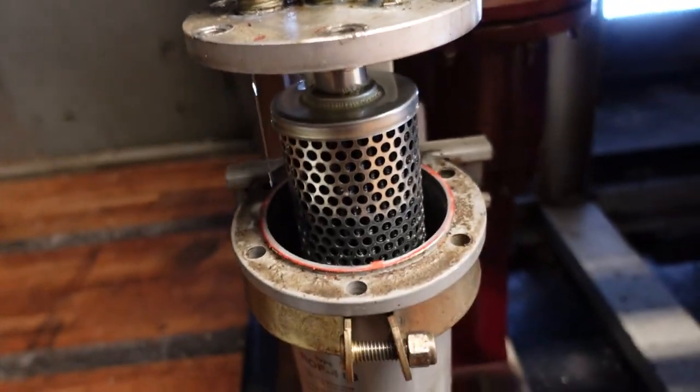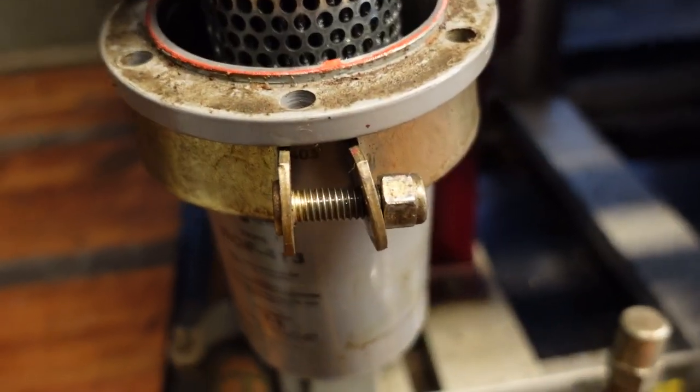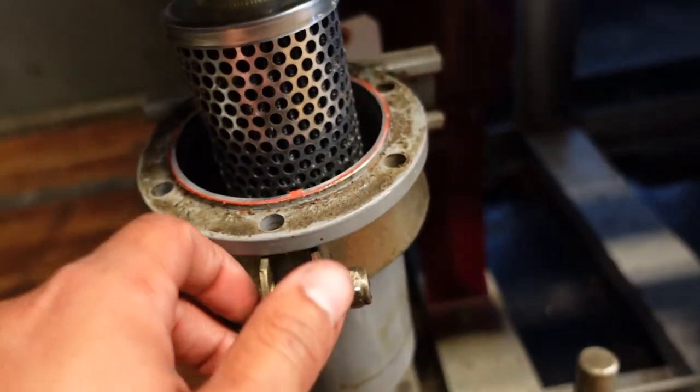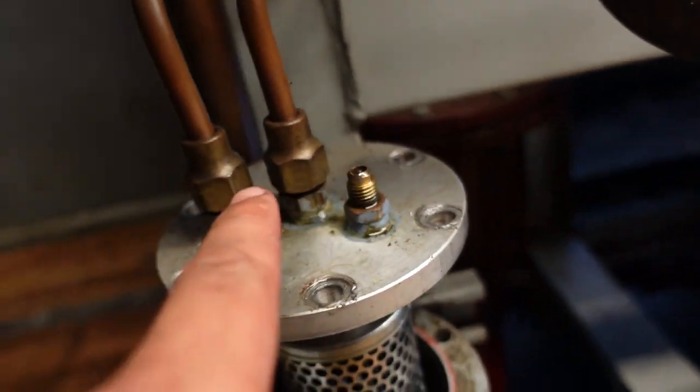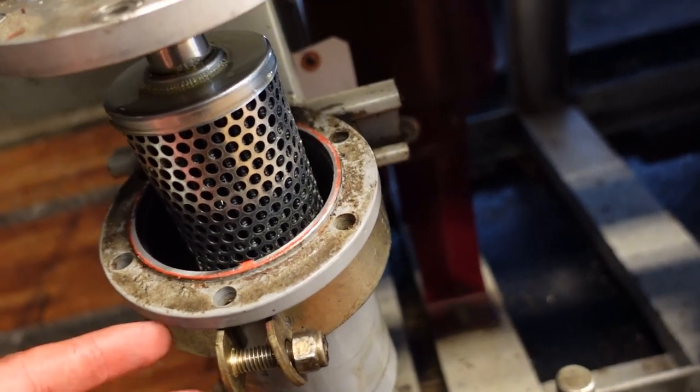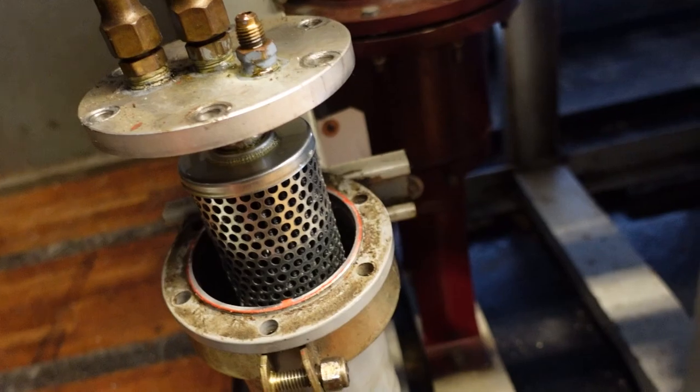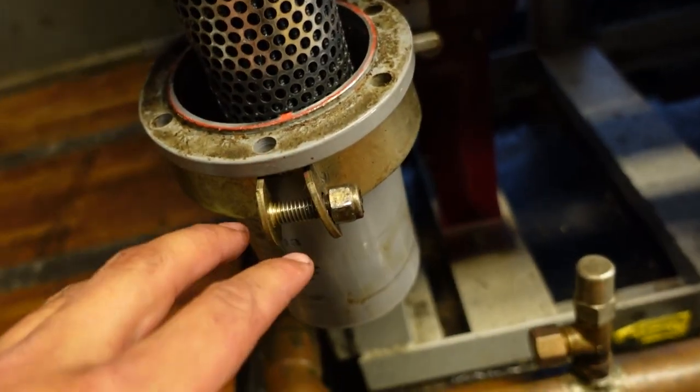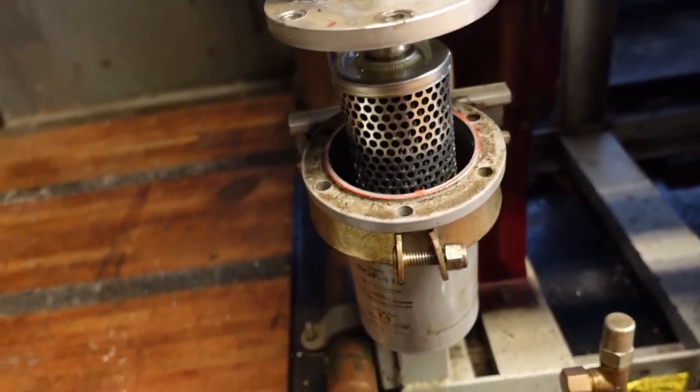I find it a lot easier when you unbolt all the bolts and just loosen the mount and just drop it. That way you don't have to fight with getting any of these flare nuts not tight enough or have trouble getting them off and having to redo the flares or anything. I find dropping this, pulling the filter out, makes it so much easier.